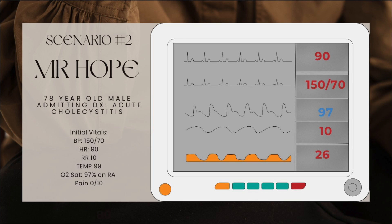Moving on to scenario number two. Mr. Hope is a 78-year-old male admitted to the medical-surgical unit for acute cholecystitis, status post cholecystectomy. I go to assess Mr. Hope at 8am. His current vitals are: blood pressure 150 over 70, heart rate 90, respiratory rate 10, temperature 99, O2 saturation 97% on room air, and pain 0 out of 10. His family reports the patient is stoic and has a high pain tolerance.